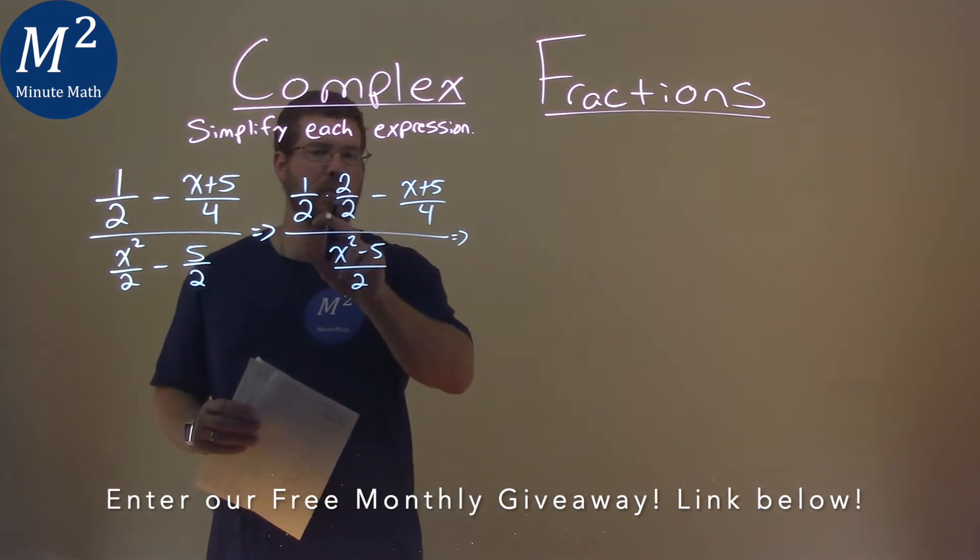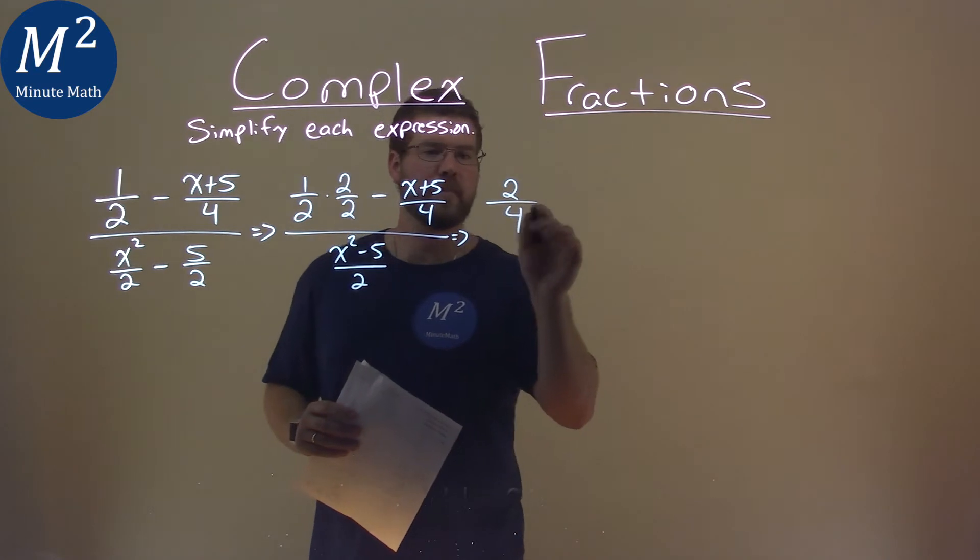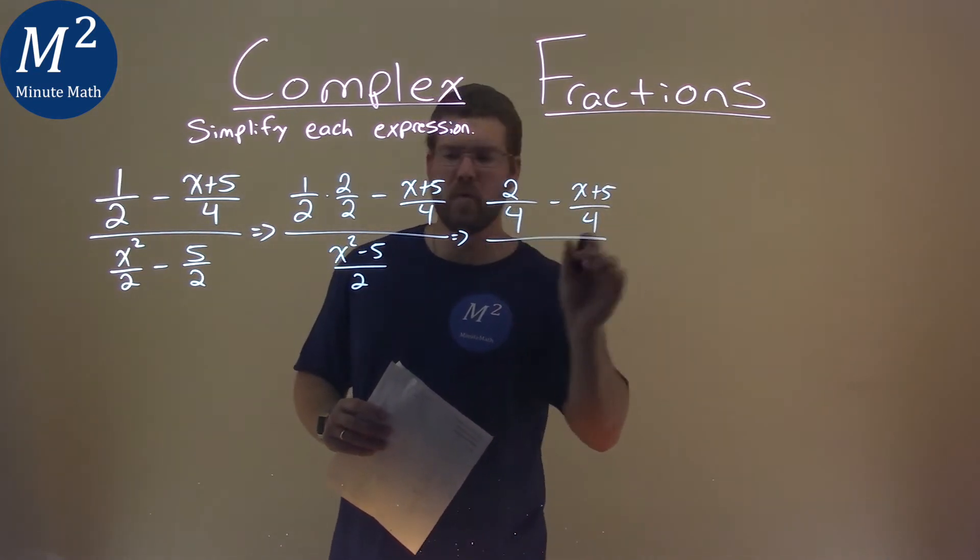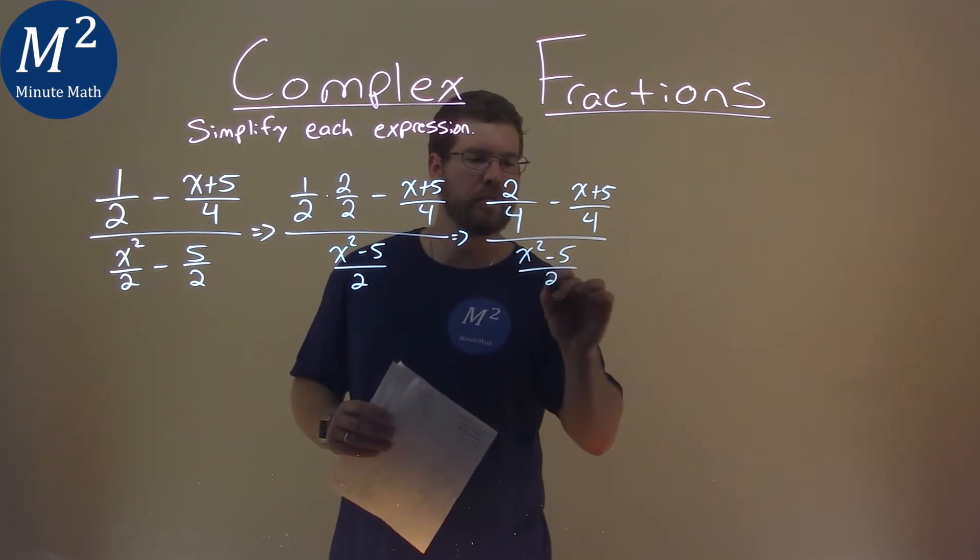Keep on going. Let's multiply this out. 1 times 2 is a 2 and 2 times 2 is a 4. And we have minus an x plus 5 over 4 over this denominator, x squared minus 5 over 2.